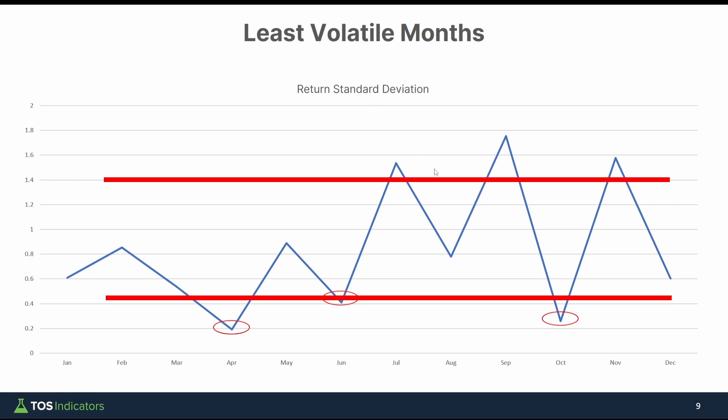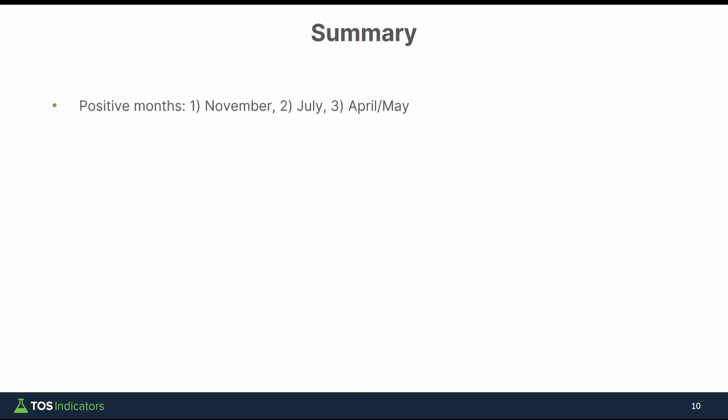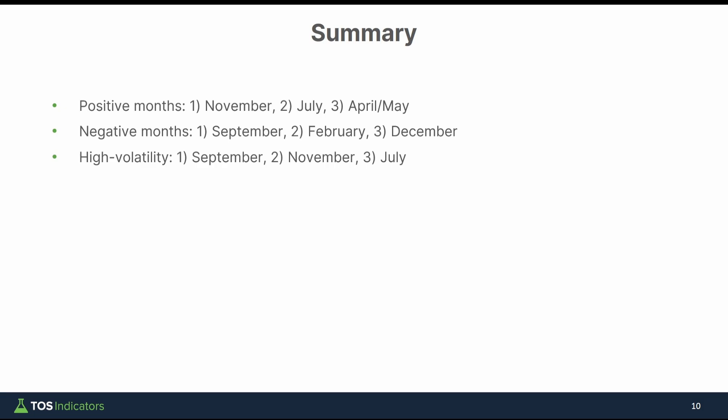At this point, what we've gathered is where there is more volatility compared to less volatility, what the different returns look like per month, where we outperform versus underperform, and we also analyzed frequency. To summarize: positive months are November, July, and the April-May period. Negative months are September, February, and December. Periods of high volatility are September, November, and July. And periods of low volatility, consistently over 30 years, are April, October, and June.